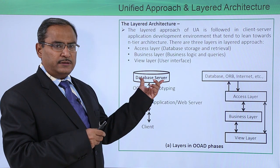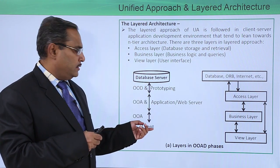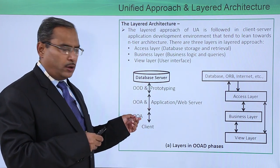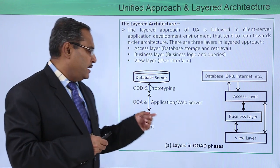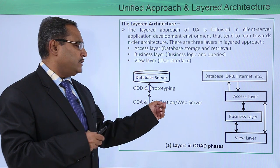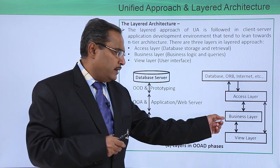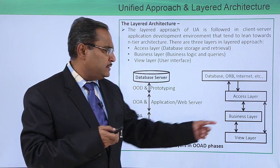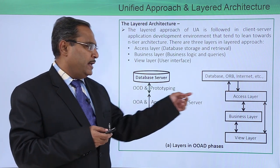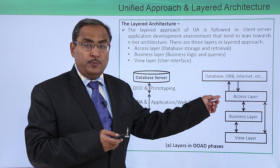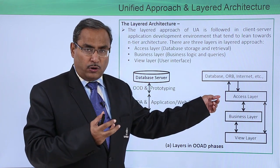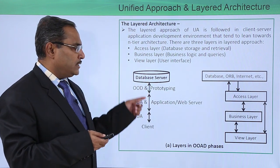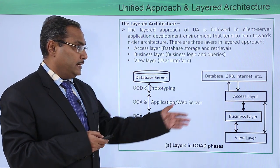Here we have the database server on one side and the user or client on the other. In the first layer we have OOA, which is the view layer. In the second layer we have the application or web server containing the business layer with different constraints, rules, regulations and queries. This corresponds to object oriented design and prototyping. The access layer holds the protocols for database storage, retrieval and accessing.